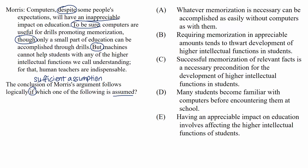First, let's mark our conclusion. We don't have any clear conclusion signal words that jump out at us right away, so let's decide what the entire argument is meant to try to prove. Morris opens up by predicting that computers, despite some people's expectations, will have an inappreciable impact on education. Does the rest of the passage serve to support that idea? Yes. A good clue is also that Morris is rebutting what some people expect to happen — that's a very common conclusion structure.